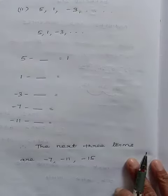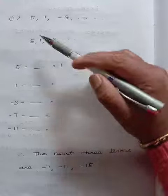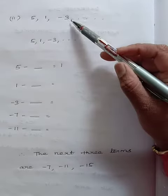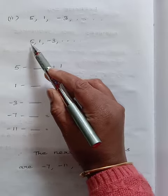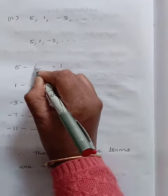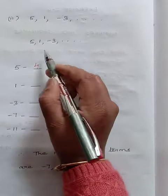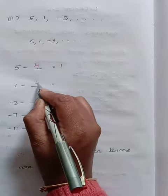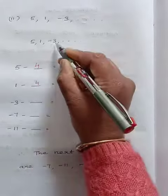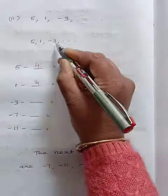Next we will come to Roman letter 2. 5, 1, minus 3. What is done with 5 to get 1? 5 minus 4 gives you 1. We will check whether it is possible for the next two terms. 1 minus 4, minus 3. So it is correct. Now we can proceed the same.